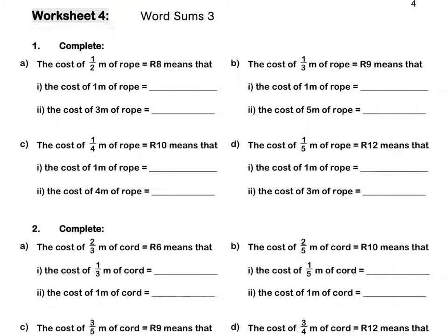Worksheet 4. Question 1. The cost of half a metre of rope is 8 rand. This means that the cost of one metre of rope will be 16 rand, because the half metre is 8 rand, so one metre will be double that, which is 16 rand.